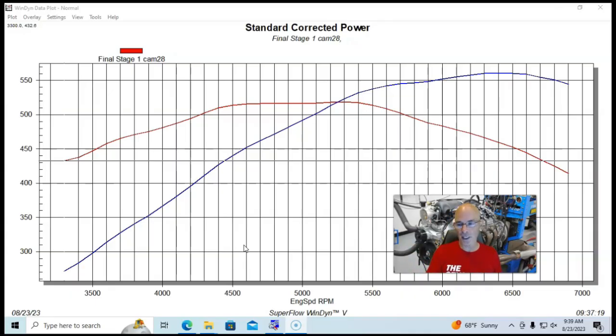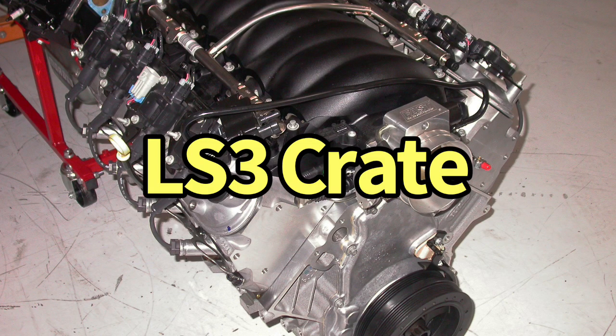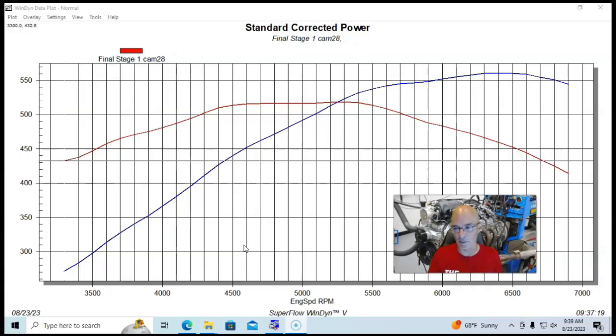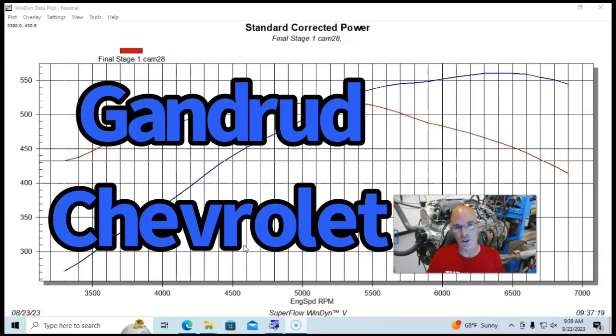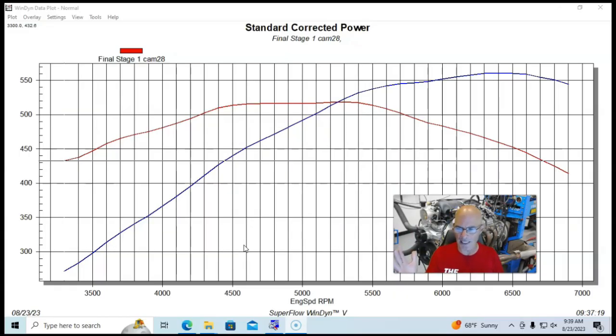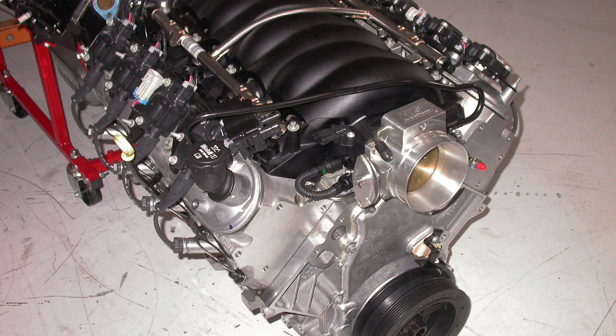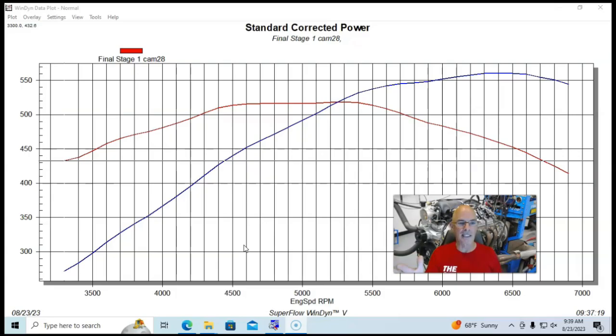We're going to jump right in. Our first test motor is basically a crate LS3 I bought from the guys at Gander Chevrolet way back. We use this for lots of testing. The factory GM LS3 stuff came right off the assembly line. We use this for a lot of testing.